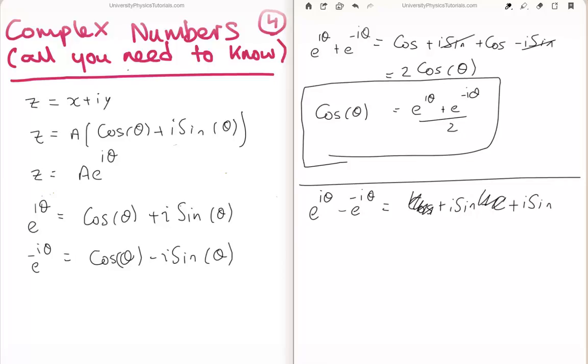This time the cosines cancel. And we're left that sin theta is equal to e to the i theta minus e to the minus i theta divided by 2i.